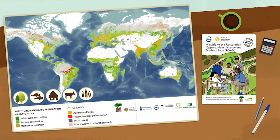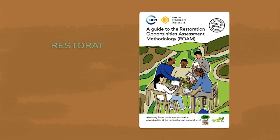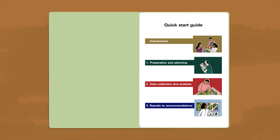But where to start and how to proceed? Introducing the Restoration Opportunity Assessment Methodology, or ROAM. ROAM is a flexible framework for identifying restoration opportunities at national and sub-national levels.